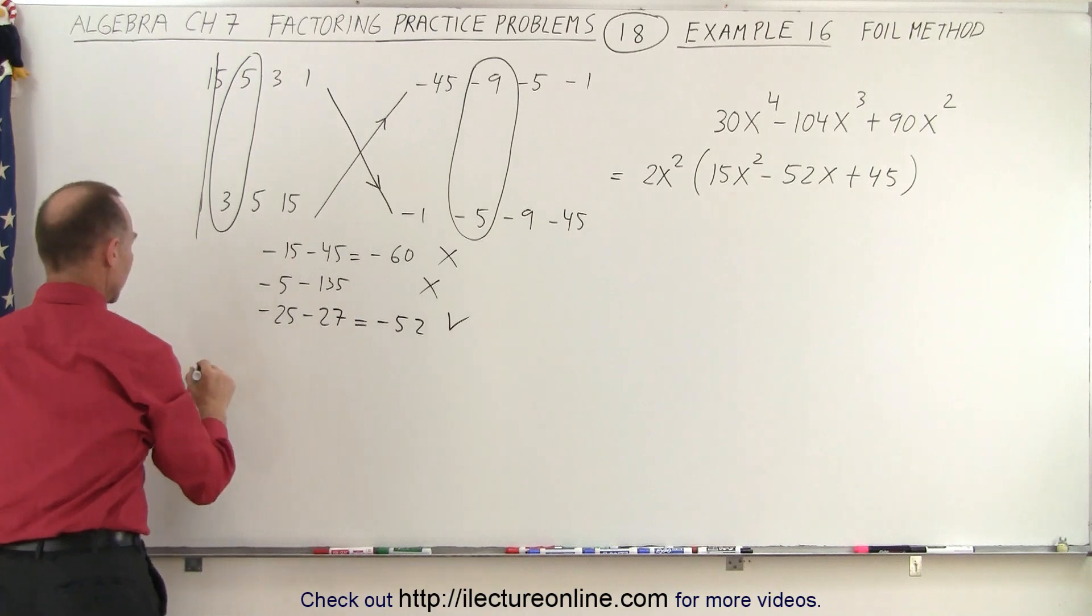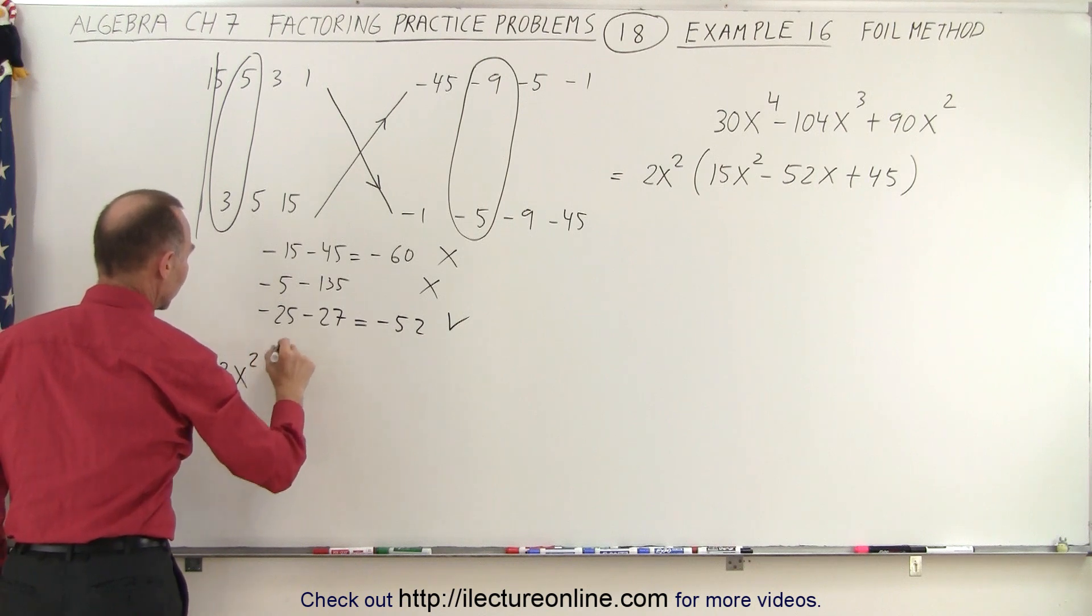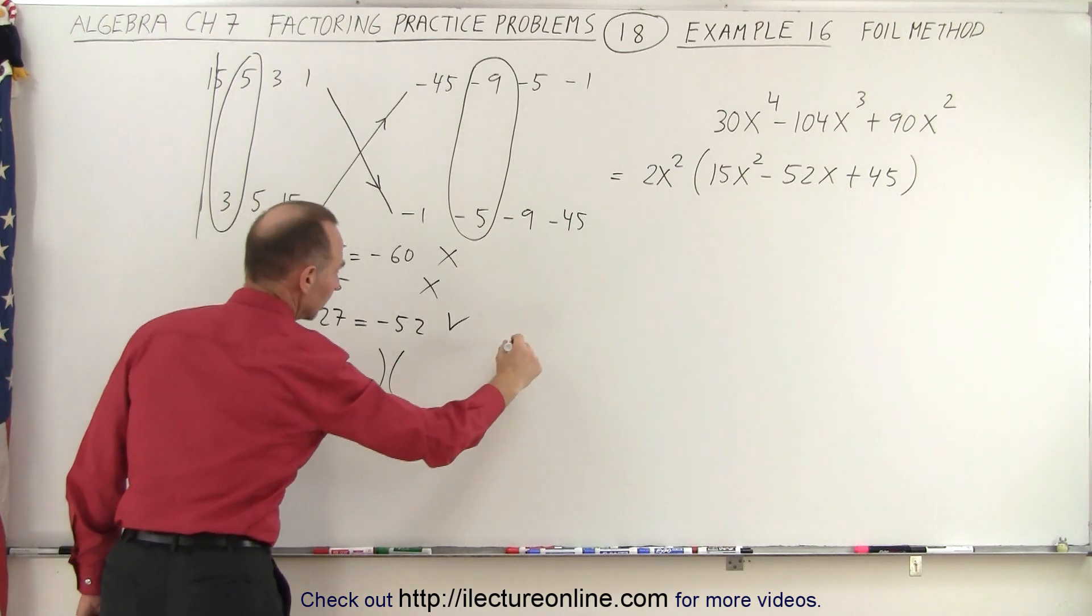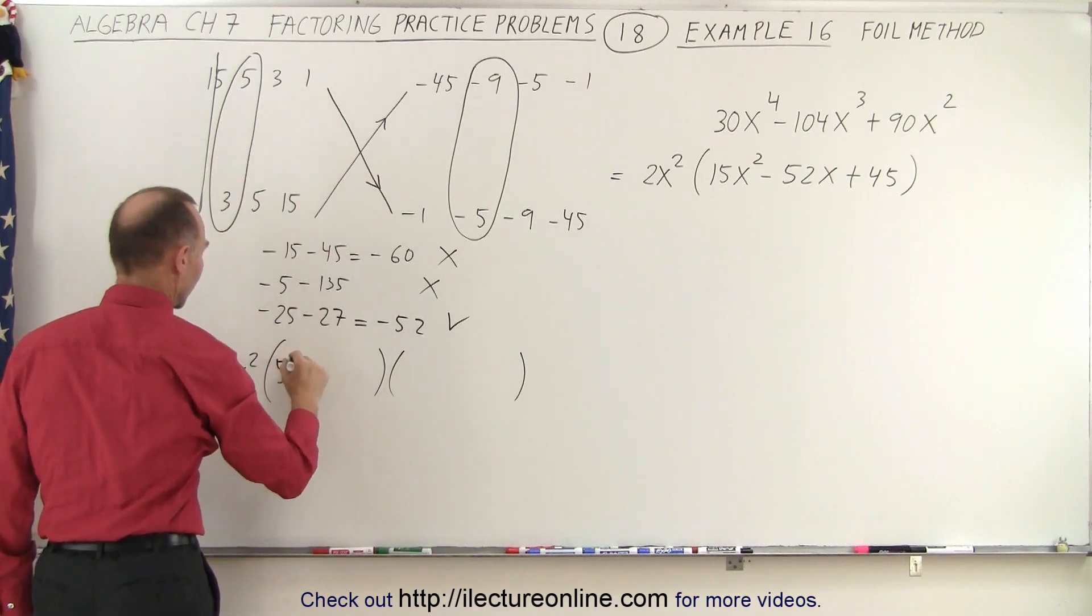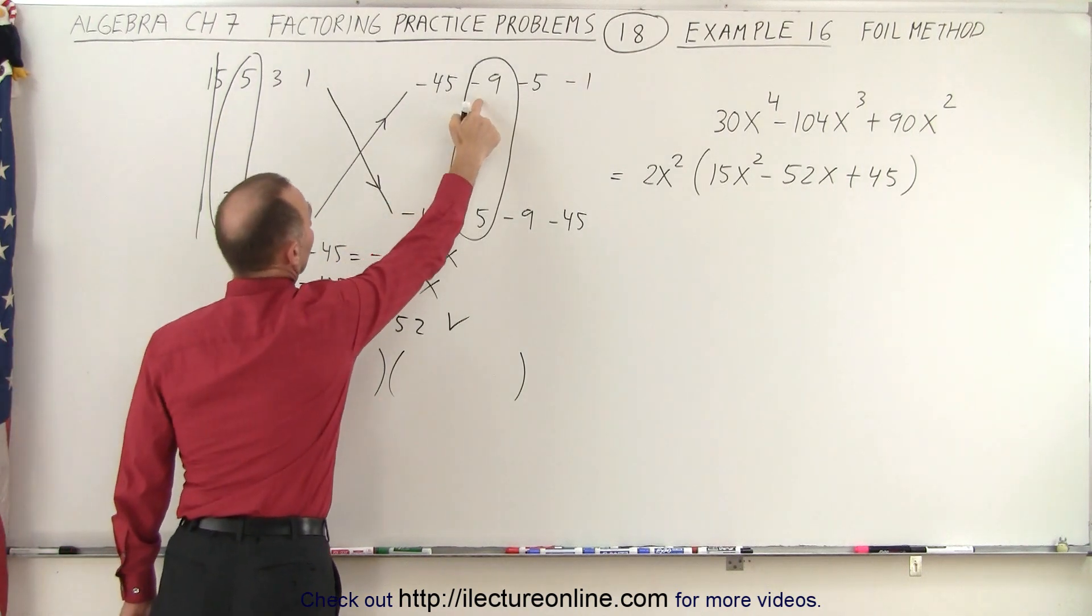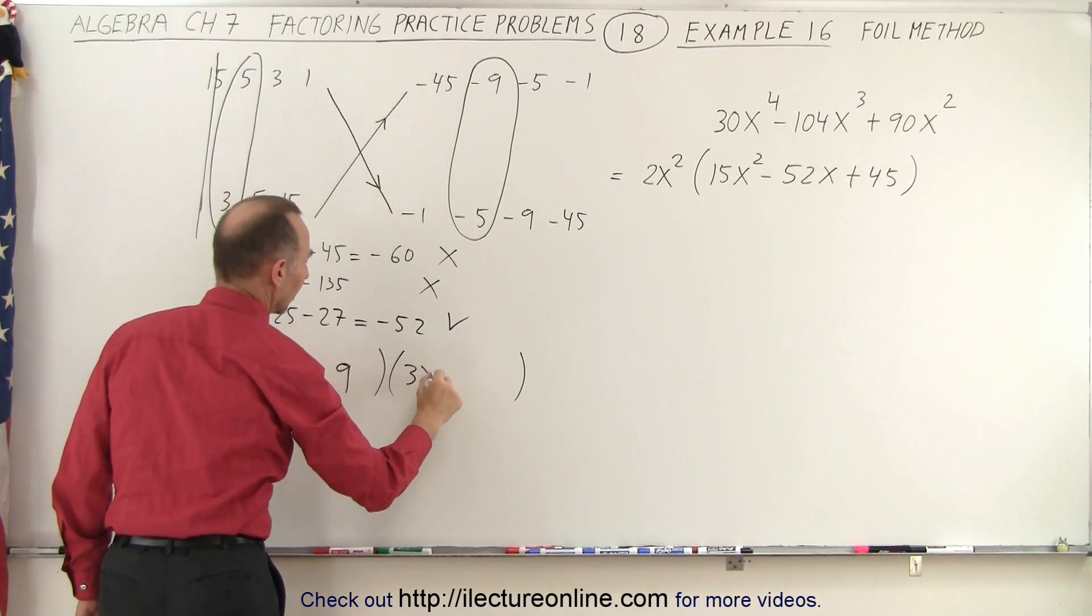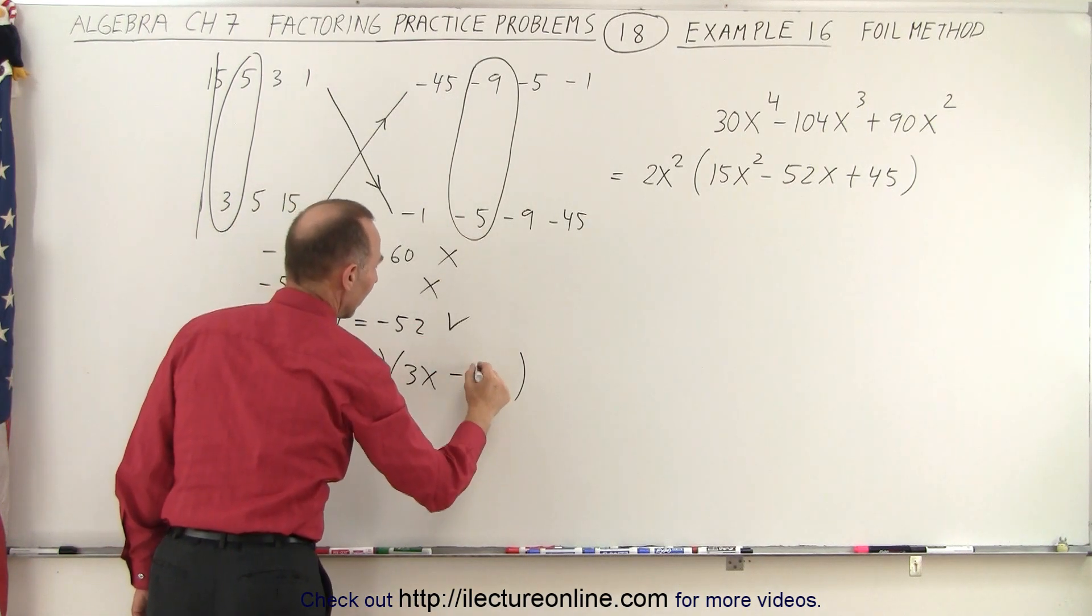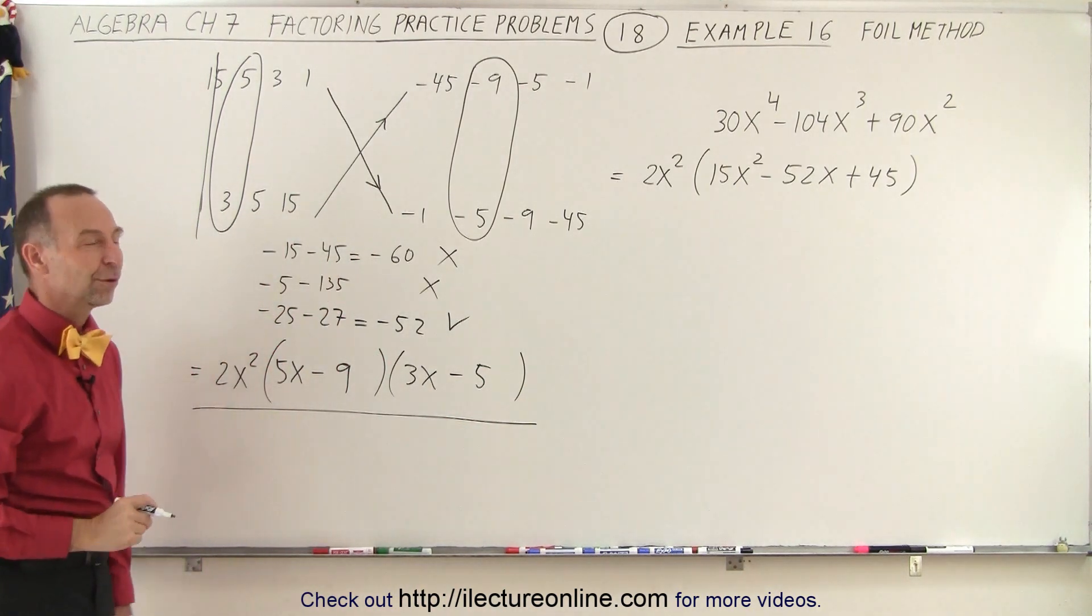So I can say this is equal to 2x-squared times, for the first binomial, I get 5x minus 9, and I get 3x minus 5. And this is the correct factored form of my original problem.